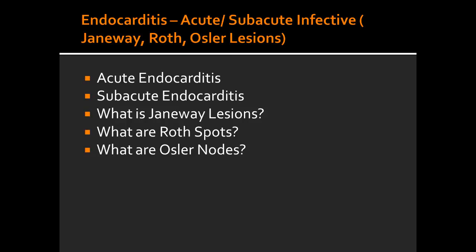What are some of the causes of subacute infective endocarditis? Some of the causes of subacute infective endocarditis include Strep viridans and gram-negative bacilli.